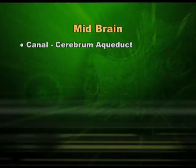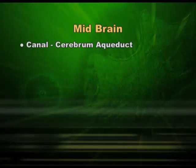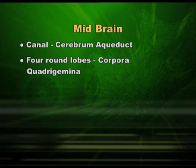The midbrain has a canal which is called the cerebral aqueduct. The word cerebral comes from cerebrum. This canal continues a little further. The midbrain also has four round structures which we call lobes or quadrigemina. These two parts really make the midbrain, but the midbrain has many other roles to play.